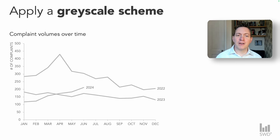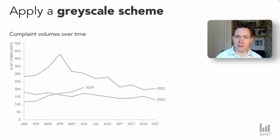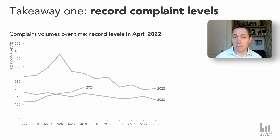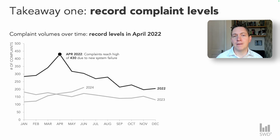Reflecting on my first insight — the highest level of complaints in April — I can choose to highlight this with a combination of techniques. I'll update the title, make the line darker, and add an annotation. Reading the title now, I have a clear understanding of what I'm looking for and can find that information easily in the view.